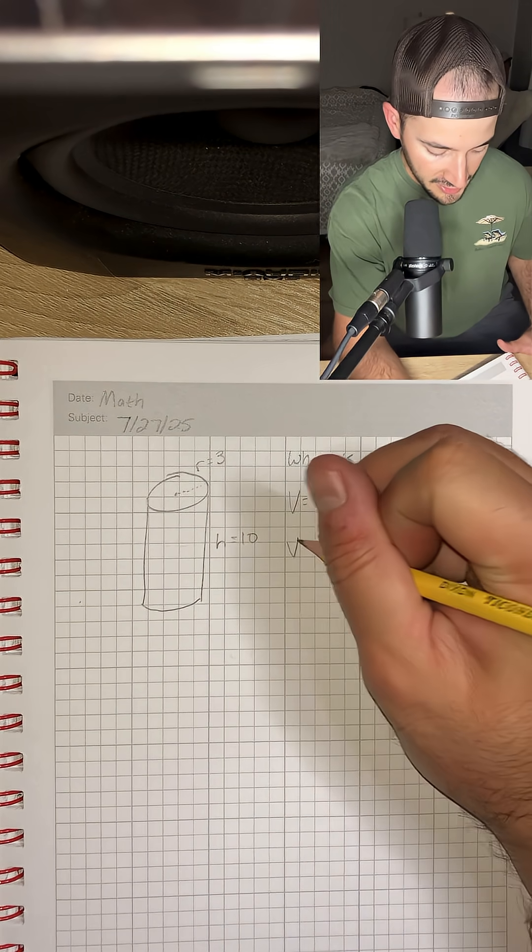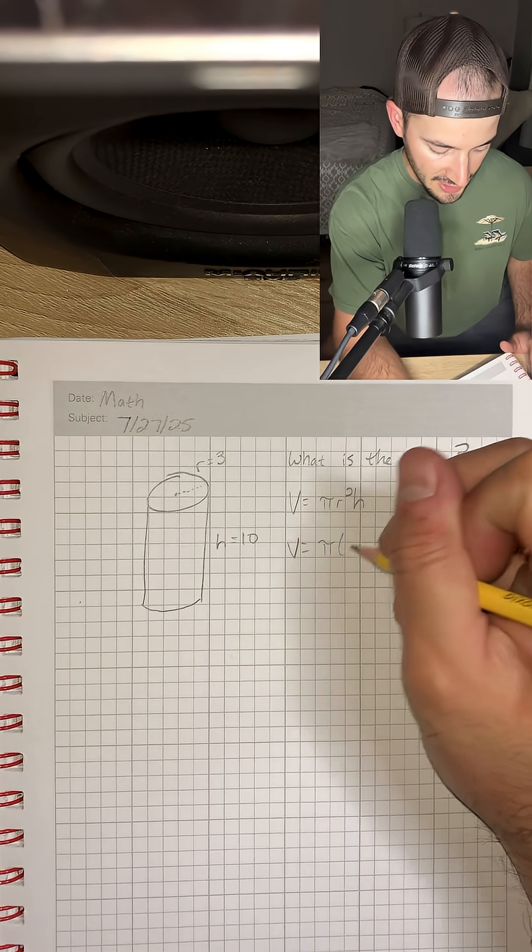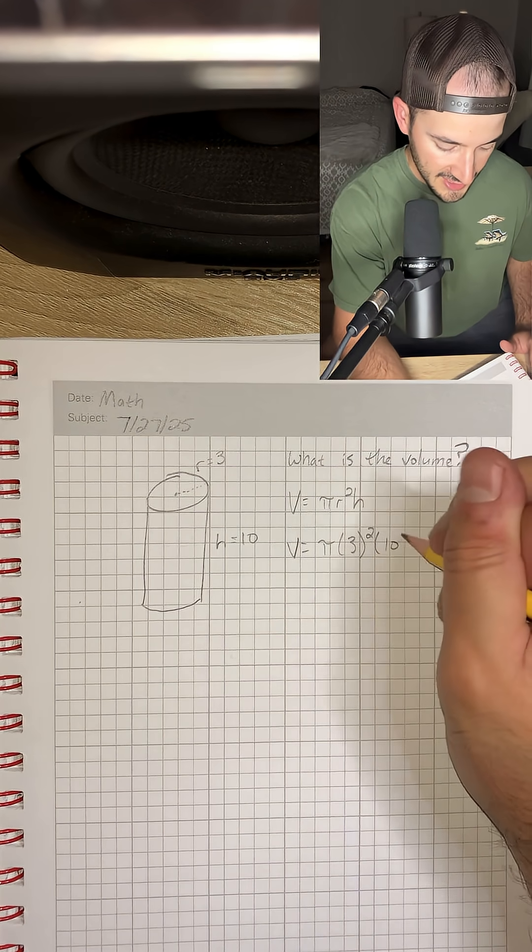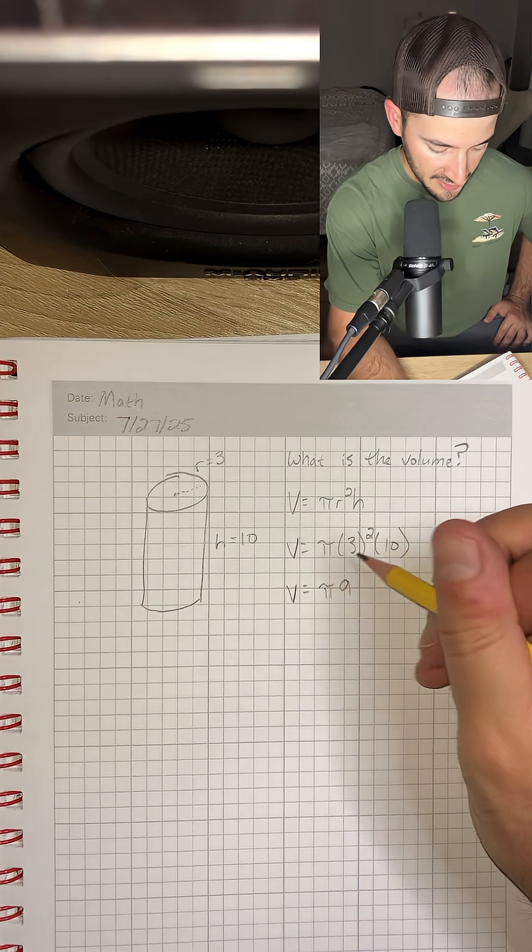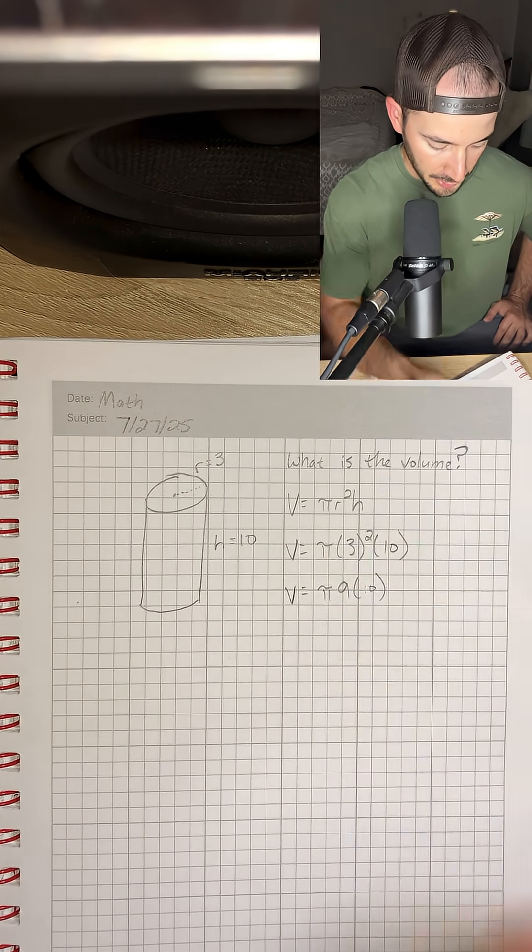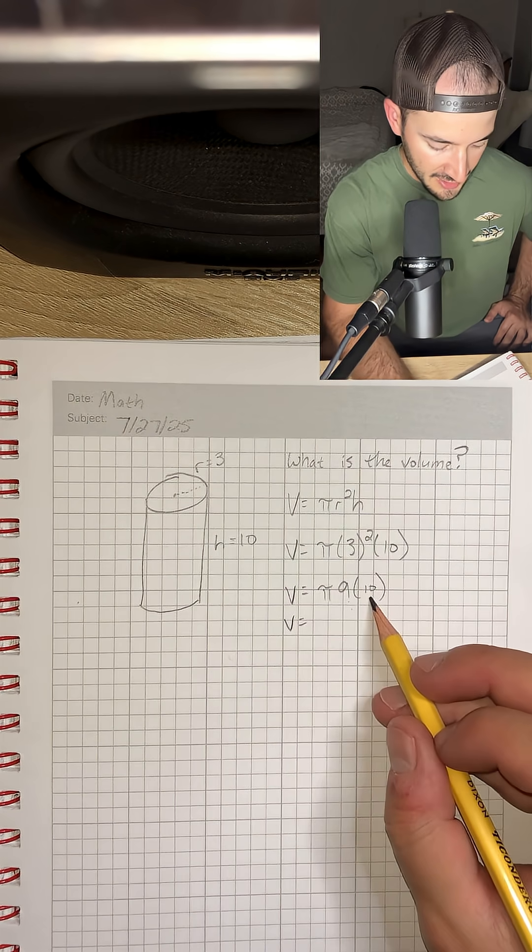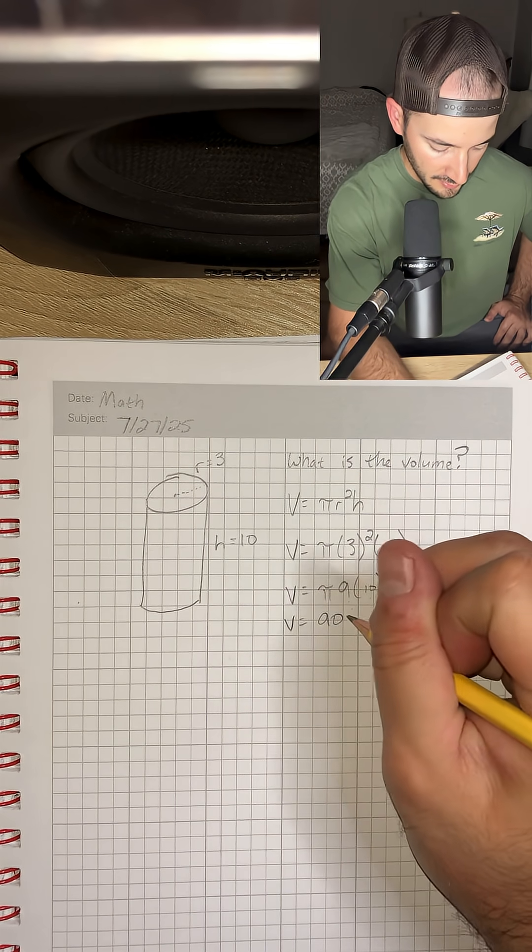So if we do that, we'll have V equals π times 3 squared times 10. Then we can reduce that to π times 9 because 3 times 3 is 9, times 10. And then we can reduce that again to 9 times 10 which is 90 times π.